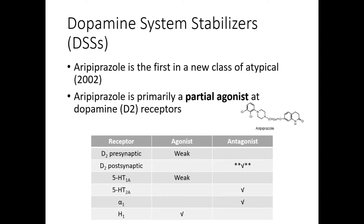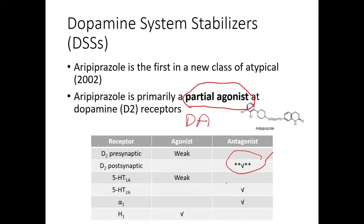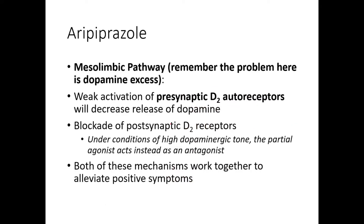Here is the pharmacological property of aripiprazole in terms of being an agonist or antagonist in different regions of the brain. The key concept is that aripiprazole is a partial agonist. In the presence of dopamine, it is weaker, so when it competes with a stronger ligand, it acts as an antagonist on postsynaptic D2 receptors. It also antagonizes 5-HT2A, but on presynaptic D2 receptors it has a weak agonist effect, and a weak agonist effect on 5-HT1A receptors.